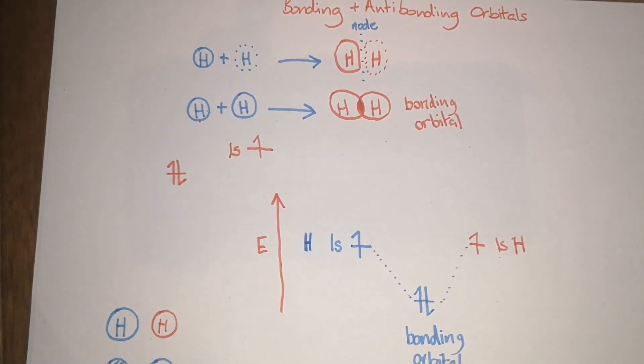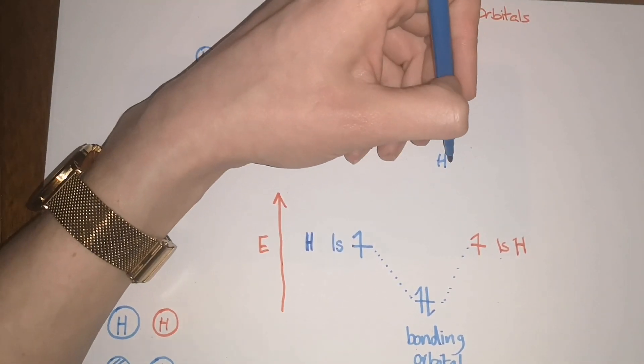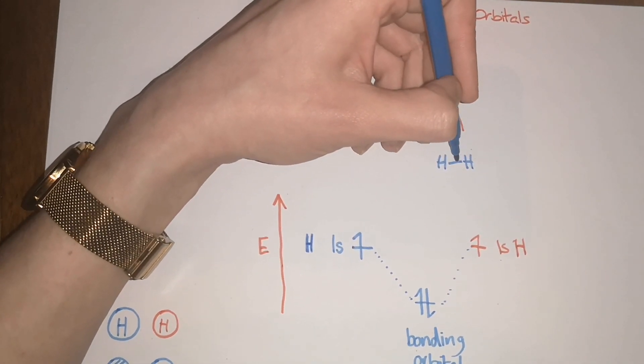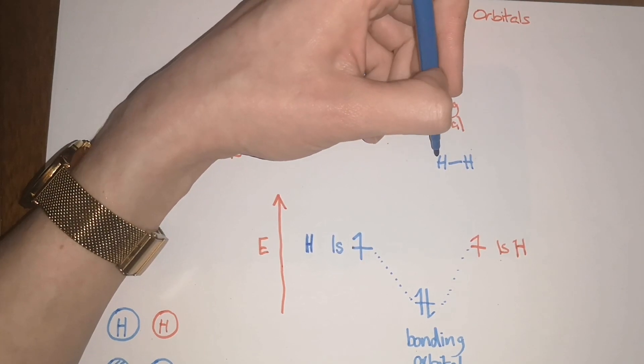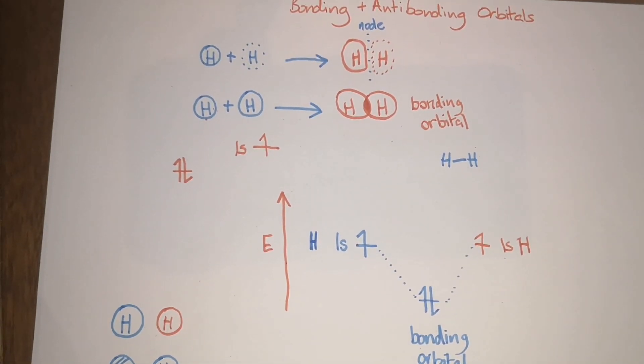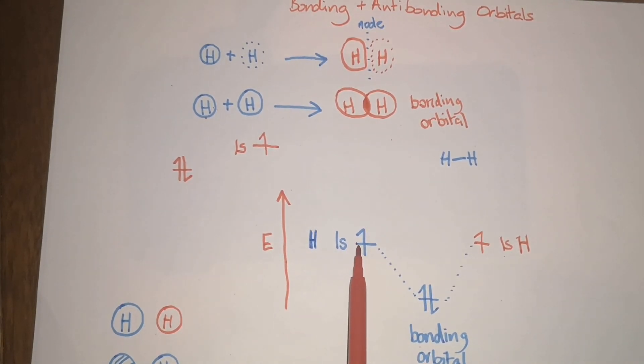This should be quite clear because when two hydrogens form a molecule, you have a bond in between where the two electrons are shared by both hydrogens at the same time. That's what's depicted here. However, what's very important in chemistry is conservation. If you started with two orbitals, you have to finish with two orbitals.